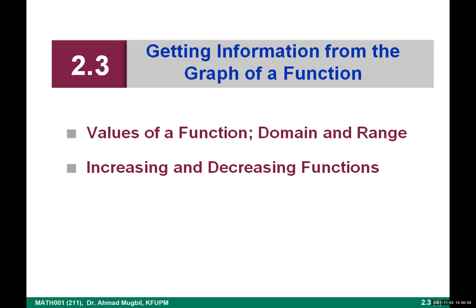Our class today is about section 2.3: how to get information from the graph of a function. Sections 2.1, 2.2, and 2.3 are almost the same — almost one section. Section 2.1 was about what a function is, how to find the domain and range for simple functions, and how to evaluate. The difference quotient and net change are evaluating skills.